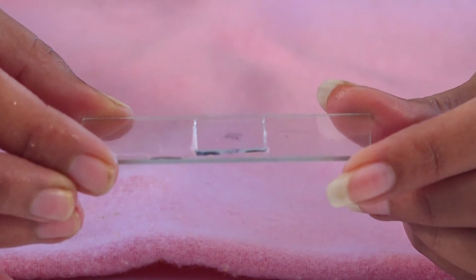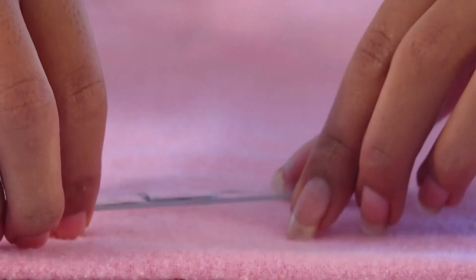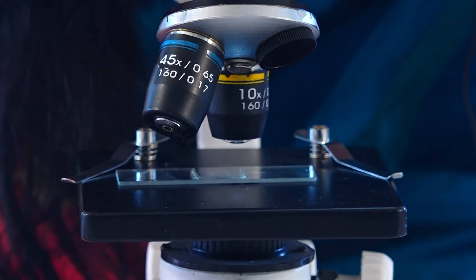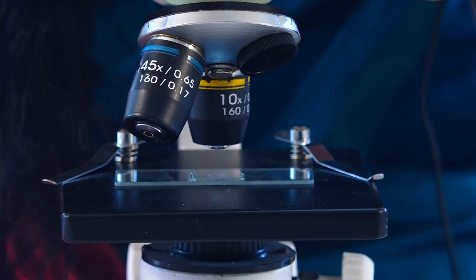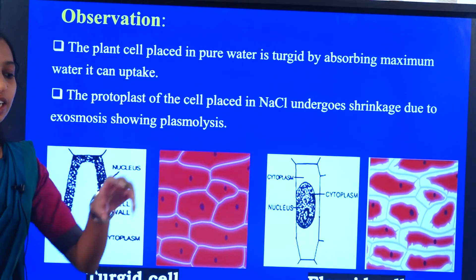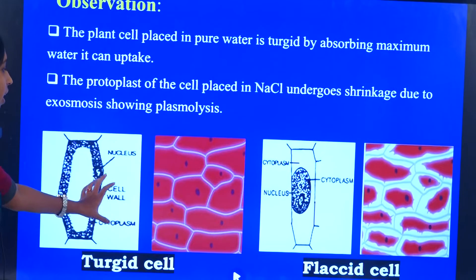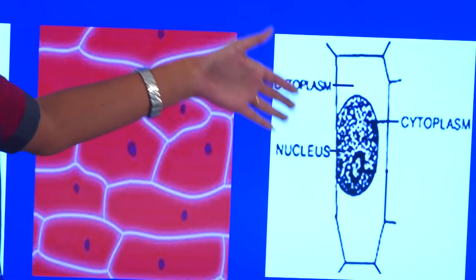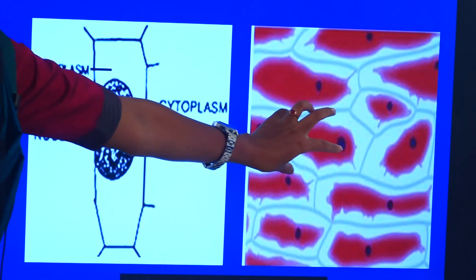Keep the prepared slide for a few minutes and then observe it under the microscope. After the absorption process, now microscopically we can observe the shrinkage of cytoplasmic content in the onion peel cells.